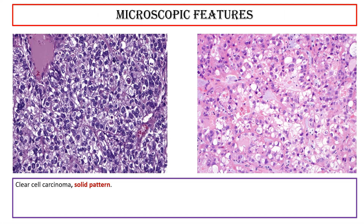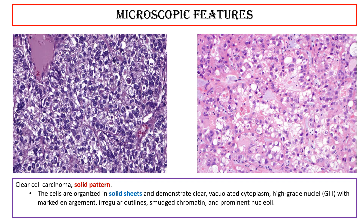Clear cell carcinoma — solid pattern: the cells are organized in solid sheets and demonstrate clear vacuolated cytoplasm, high-grade nuclei (grade 3) with marked enlargement, irregular outlines, smudged chromatin, and prominent nucleoli. Rare apoptotic bodies are seen.